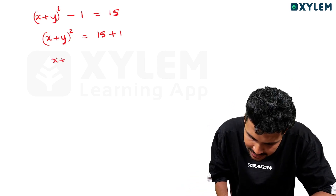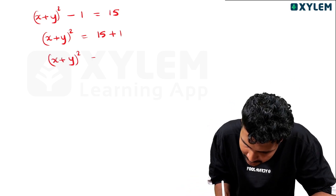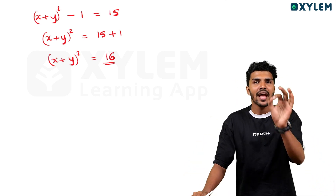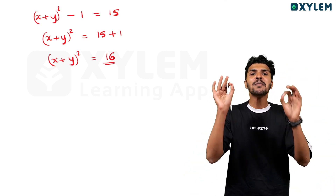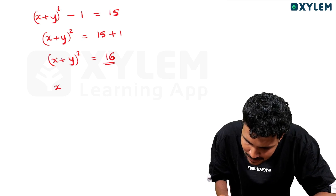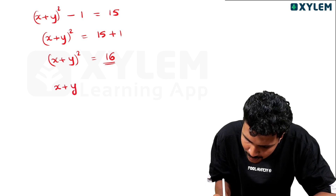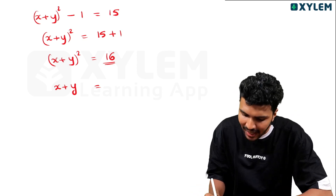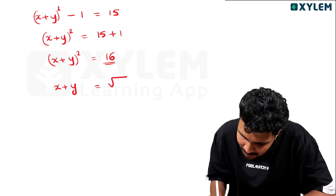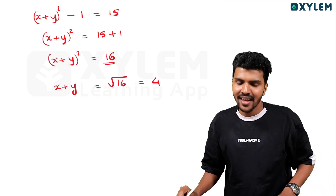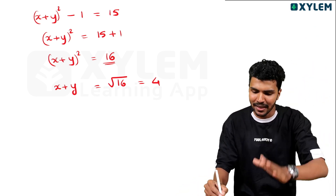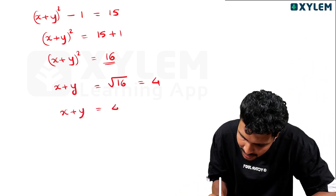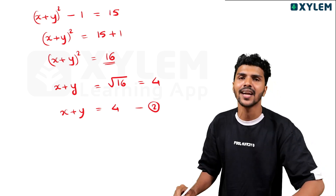x plus y whole square equals 16, so x plus y is equal to 4.